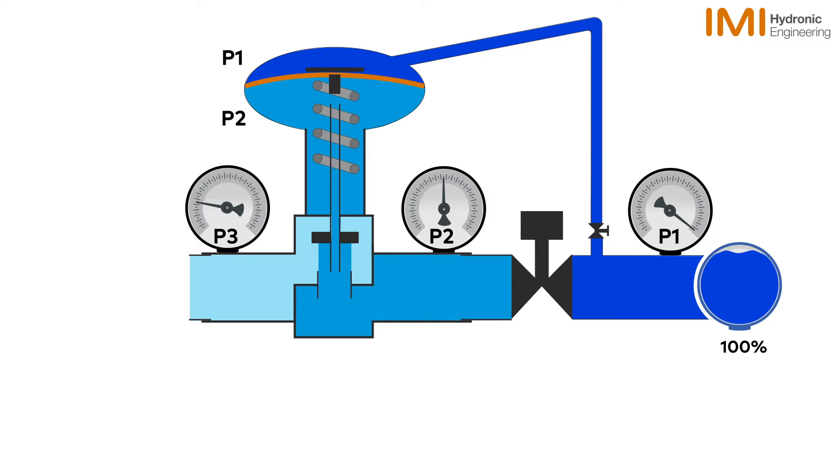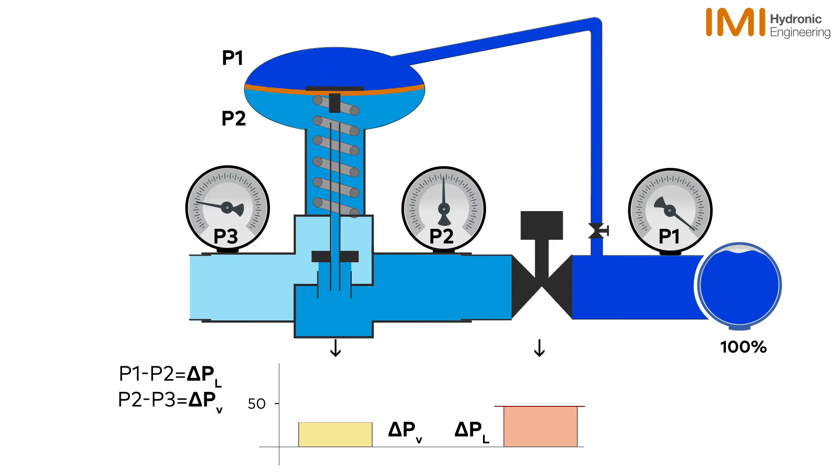In a variable volume system, the required flow will reduce proportionally to the required power output via the control valves installed on the terminal units.